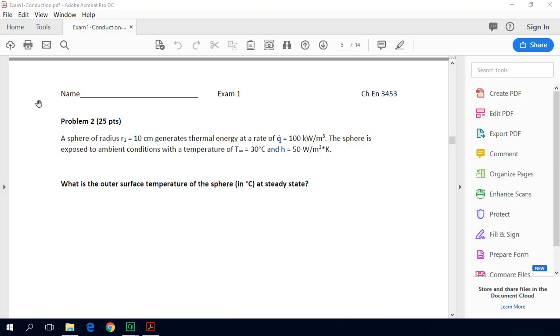The problem statement says a sphere of radius r₁ equals 10 centimeters generates thermal energy at a rate of q̇ equals 100 kilowatts per cubic meter. The sphere is exposed to ambient conditions with a temperature of T∞ equals 30 degrees Celsius and h, our convective heat transfer coefficient, is 50 watts per square meter per kelvin. What is the outer surface temperature of the sphere at steady state?